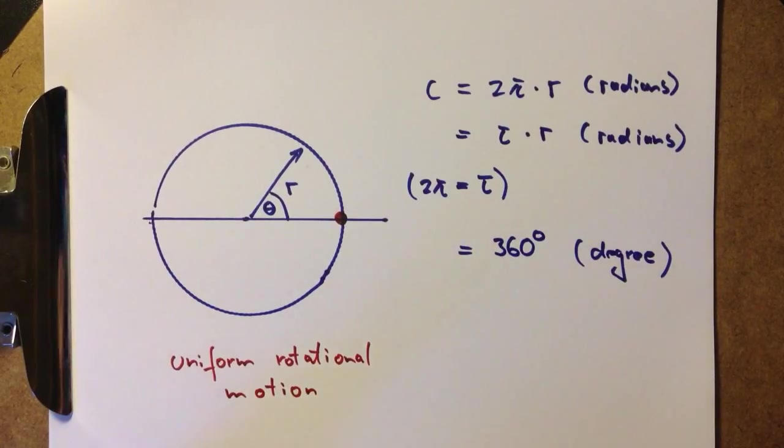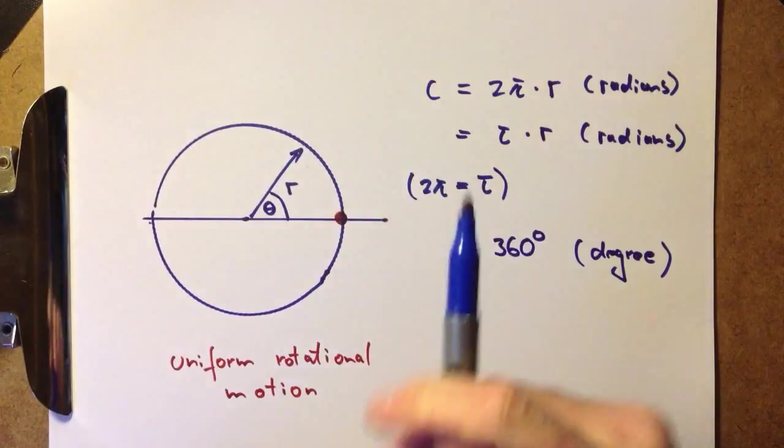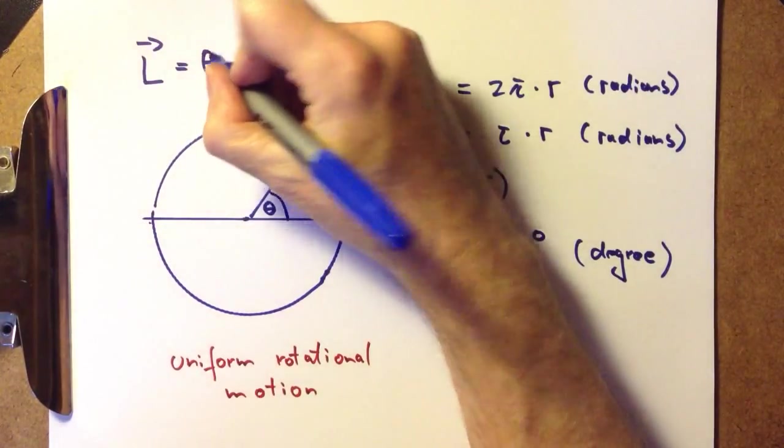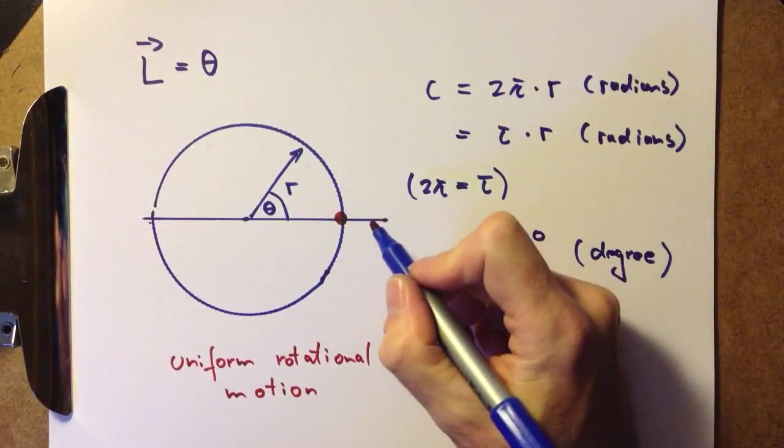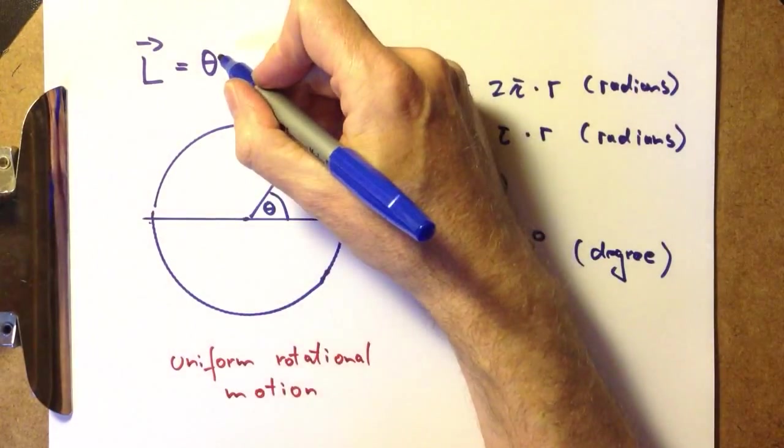This is defined by a constant angular momentum vector pointing upward, L, which is equal to the moment of inertia θ associated with—that's a different θ as the angle—moment of inertia.